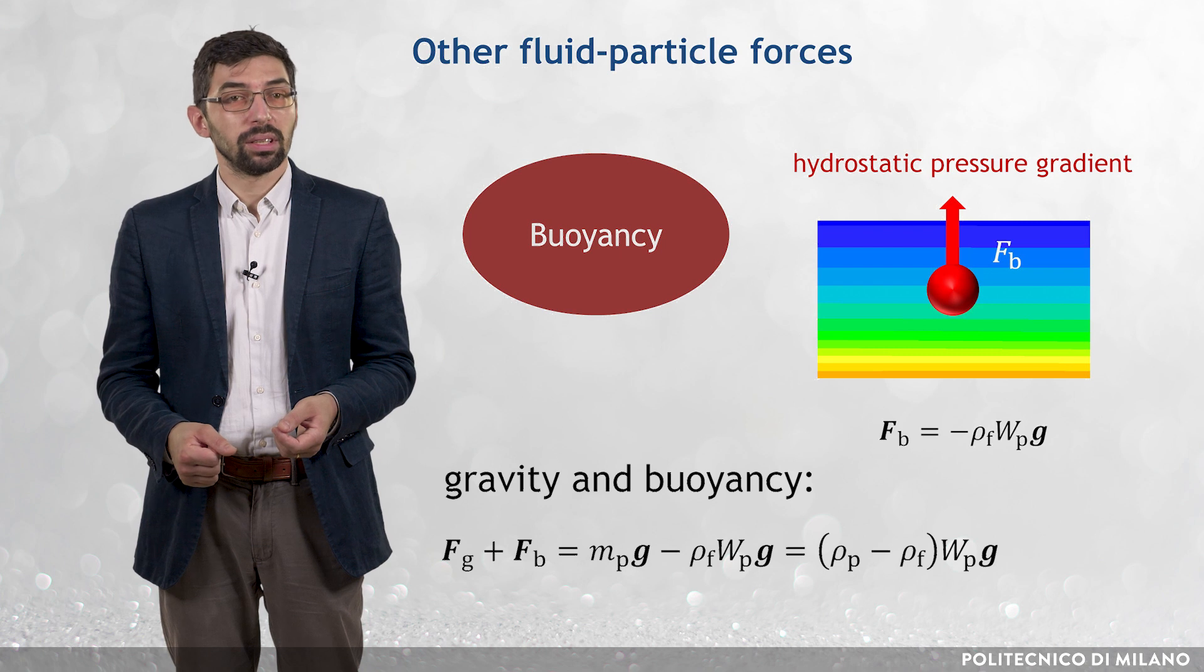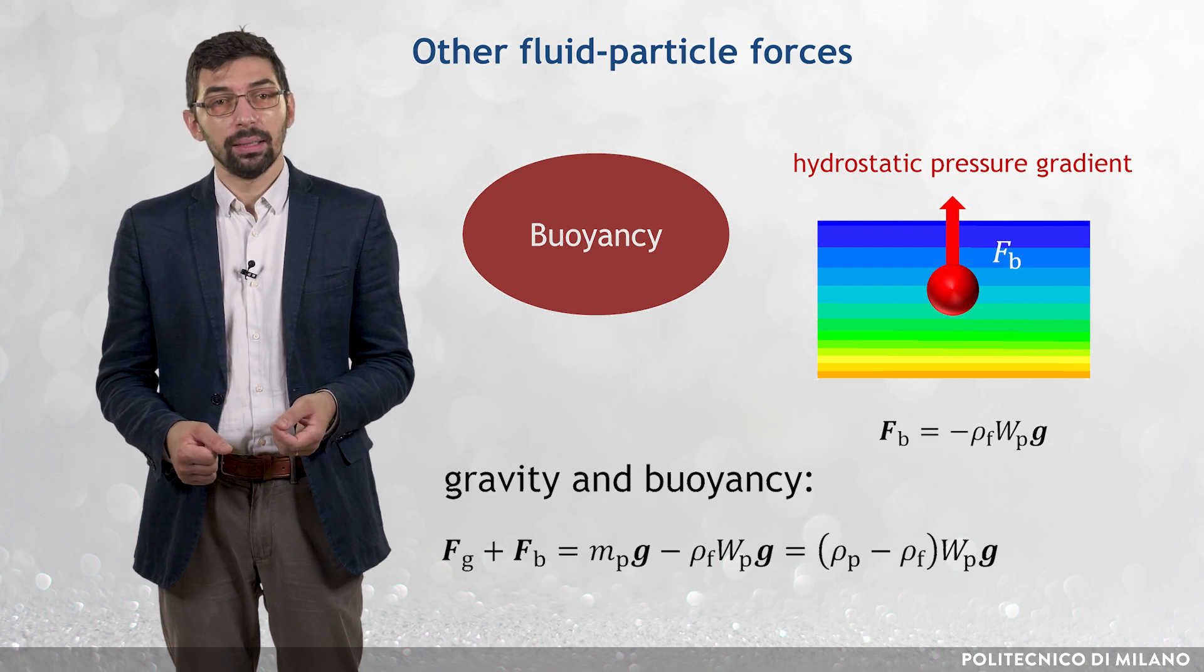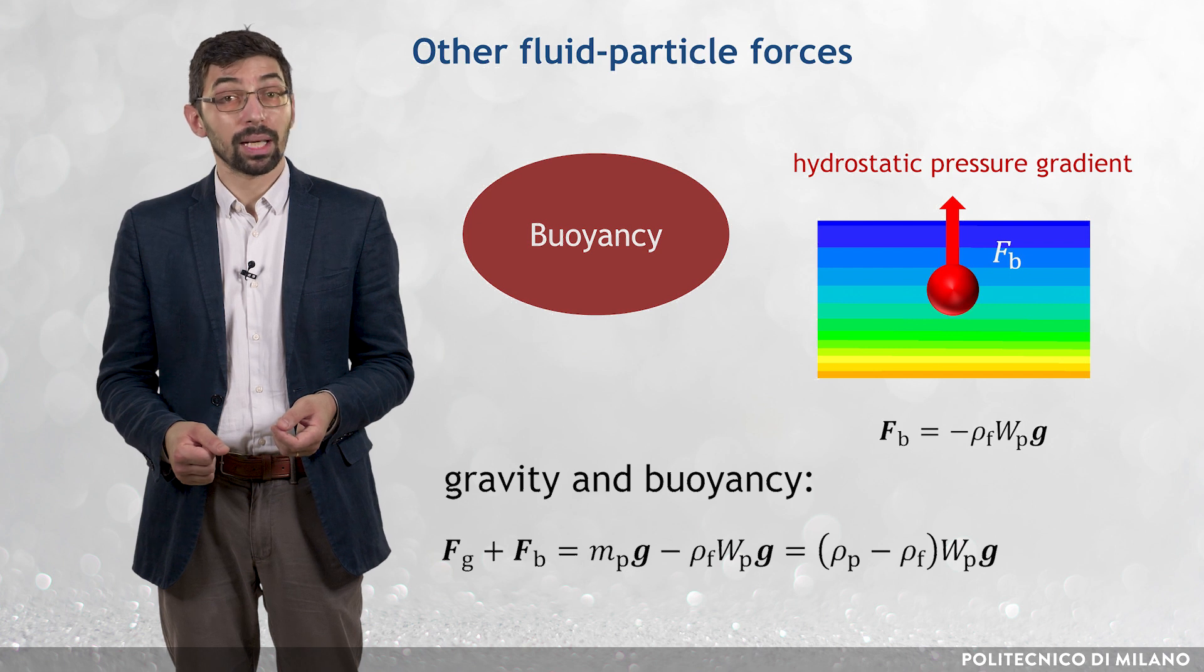Typically, gravity and buoyancy are grouped together, yielding (ρp minus ρf) times Wp times G.